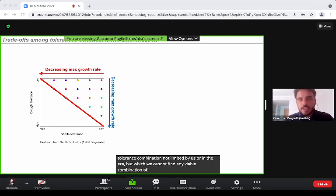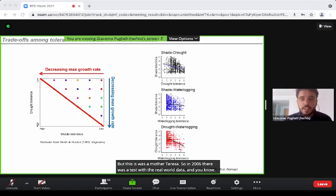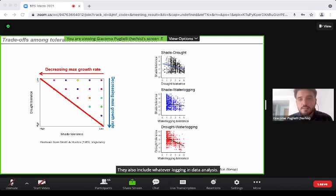This was a modeling result, so in 2006 there was a test with real-world data. Valladares actually found negative relationships among pairs of tolerances. They also included waterlogging in their analysis.